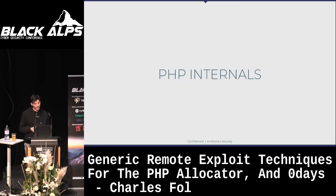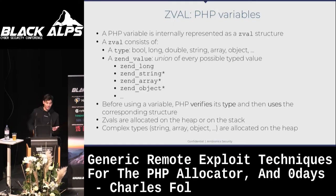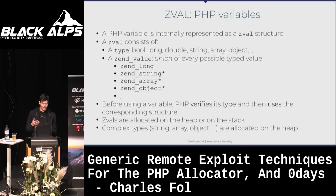Before I talk about the bugs, we have to talk about PHP's internals — and it's very simple, we're only going to cover what we need. PHP is a weakly typed language, so it has to store every variable with a type and then the representation of the variable. If your variable is a string, the type is string and the data is stored in a ZendString structure. For an array, there would be type array and a ZendArray structure. Before being used, every variable is type checked, PHP checks the type, dereferences the complex object in ZendValue, and uses it.